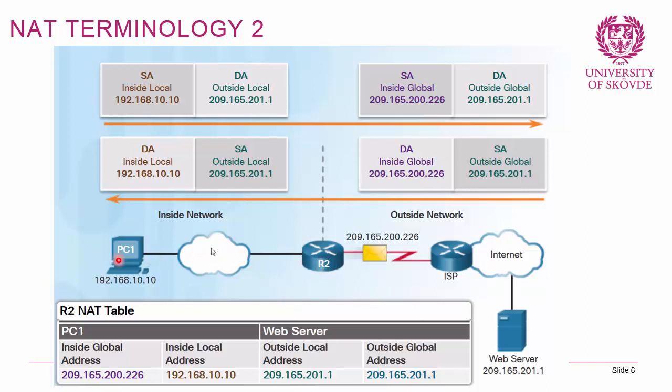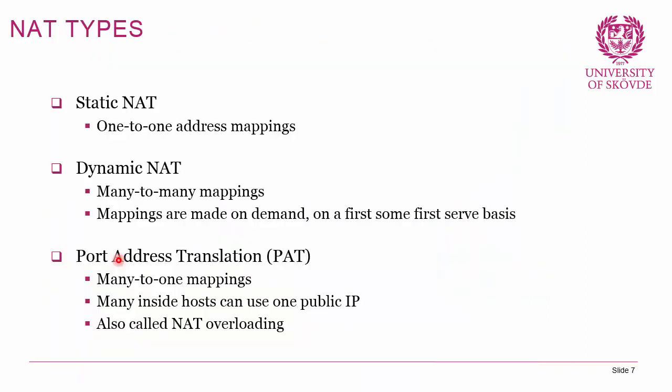Now that we know inside local, outside local, inside global, and outside global addresses, let's look at the different types of NAT. Static NAT uses one-to-one static address mappings. We configure the router to say this private IP address uses this specific public IP address. This is useful when an internal server needs a permanent static mapping to a public IP address.